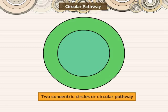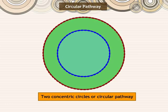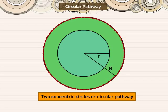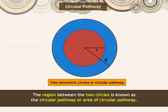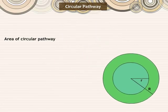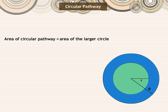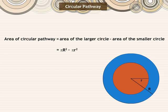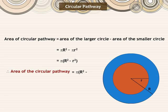Now we shall learn the area between two concentric circles or circular pathway. Observe this figure — it consists of two concentric circles. The smaller circle has radius small r and the larger circle has radius capital R units. The region between the two circles is known as the circular pathway. Area of circular path is equal to area of the large circle minus area of the smaller circle, that is pi into capital R square minus pi into small r square. Therefore, area of the circular pathway is equal to pi into (capital R square minus small r square).